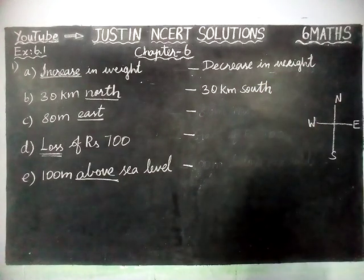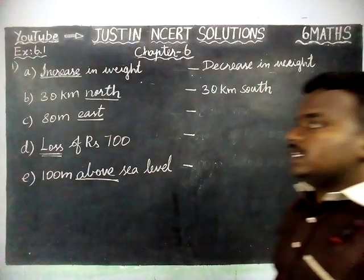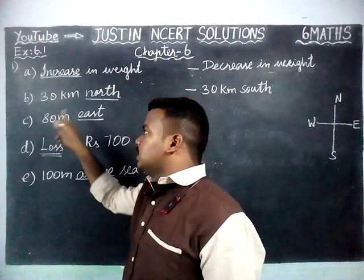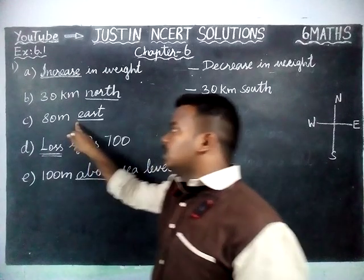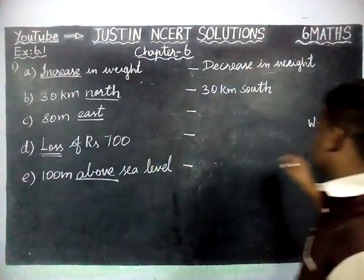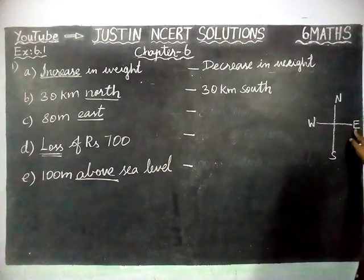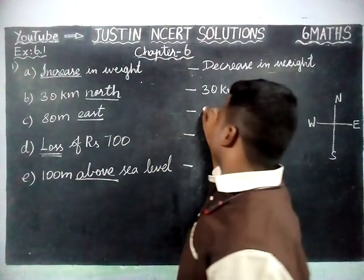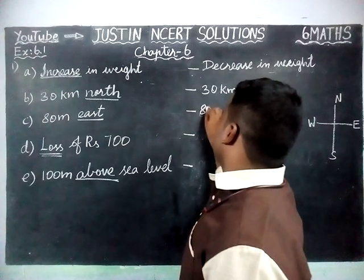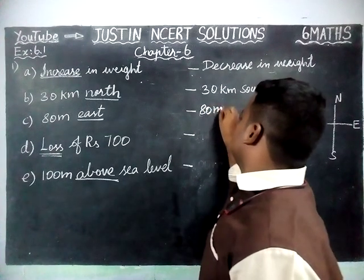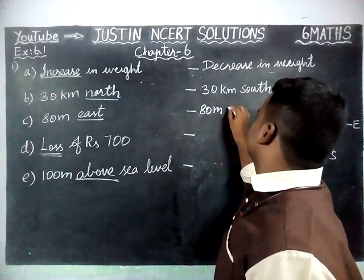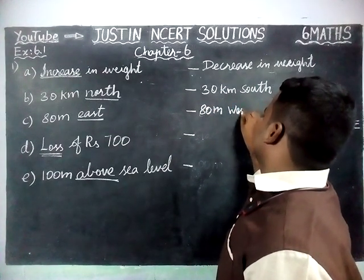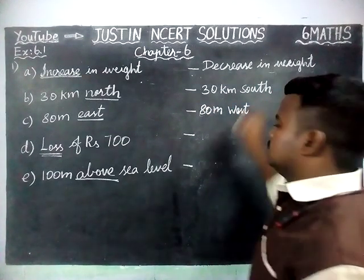Part C: 80 km east. As we already saw, the opposite of east is west. So the answer is 80 km west.